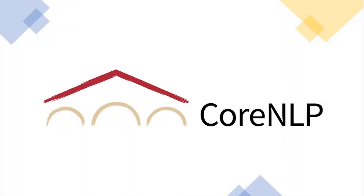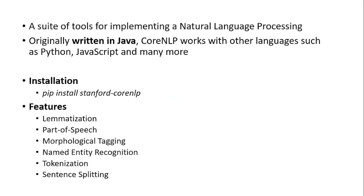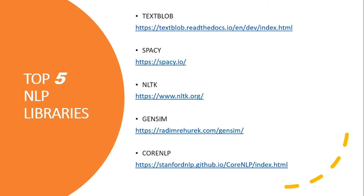The last one is CoreNLP, which is built and developed by Stanford. It is originally written in Java and is also provided in other languages such as Python, JavaScript, and many more. To install this library, use: pip install stanford-corenlp. It provides features like lemmatization, part of speech tagging, named entity recognition, tokenization, and sentence splitting.